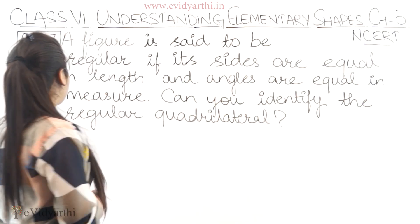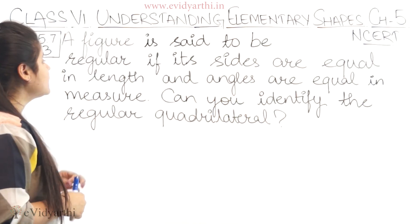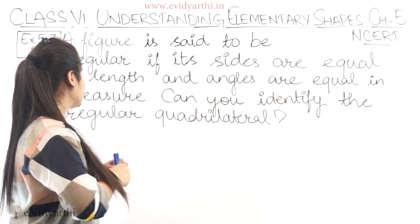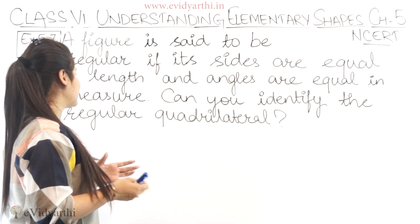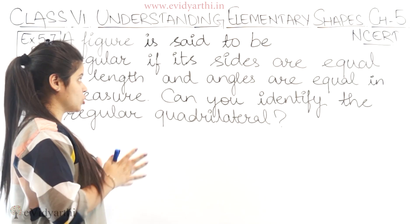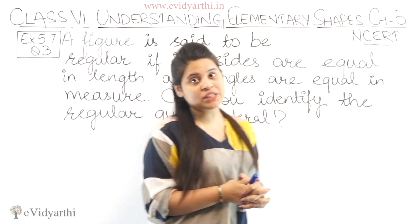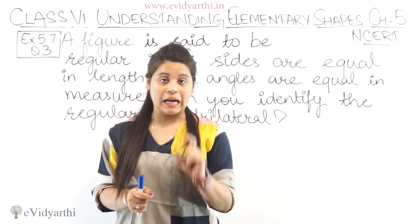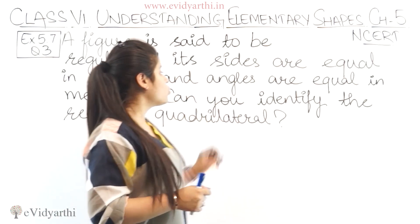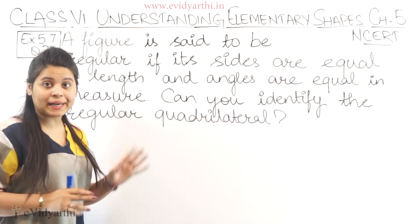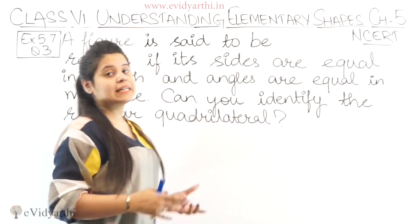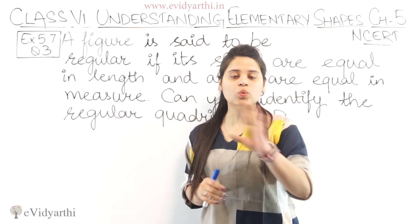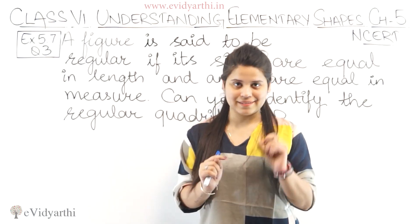So in this question we have: a figure is said to be regular if its sides are equal in length and angles are equal in measure. So here we have a definition that if we have a regular figure, its sides are equal and angle measures are equal. In short, equal sides and equal angles.